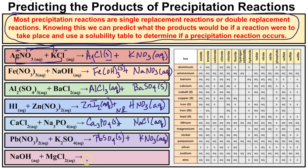Last example in this set: we have sodium hydroxide in solution with magnesium chloride. The two possible products are NaCl — we know that dissolves in water — and magnesium hydroxide. Looking at magnesium hydroxide: here's magnesium, go over to hydroxide — it says it's insoluble in water, it stays in the solid state. So a chemical reaction will end up taking place here.